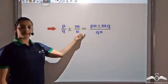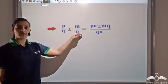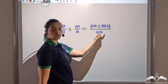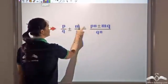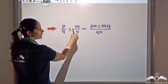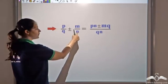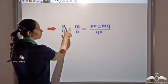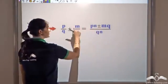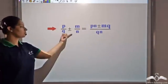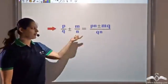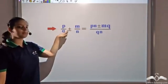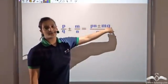So the general form is: if you have two rational numbers where the denominators are not the same, multiply the denominators together — that becomes the common denominator. For the numerator, cross multiply and add: pn plus mq. For subtraction, it would be pn minus mq divided by qn.